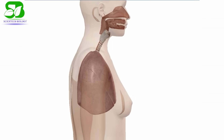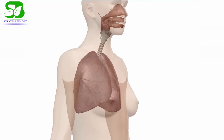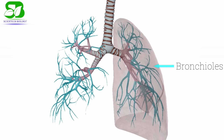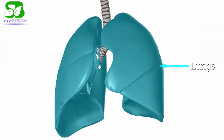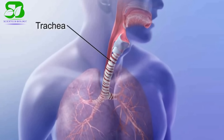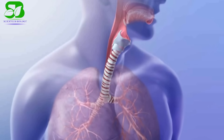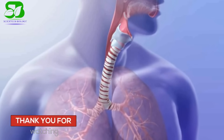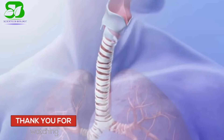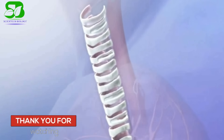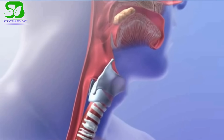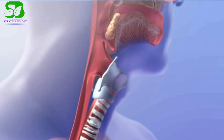The lower respiratory system consists of the trachea, bronchi, bronchioles, and lungs. The trachea extends from the larynx to the upper border of the T4 vertebra where it branches to form bronchi. The trachea is supported by a series of C-shaped cartilaginous rings that allow it to change shape to accommodate masses of food passing through the esophagus.